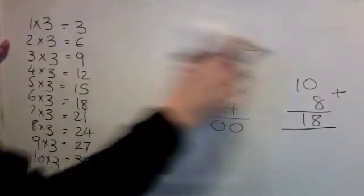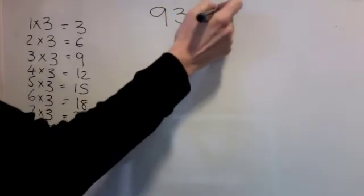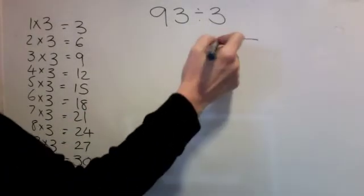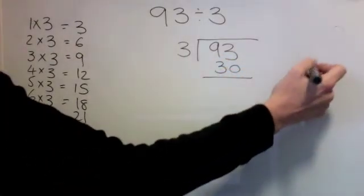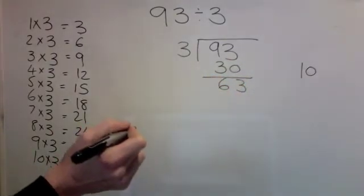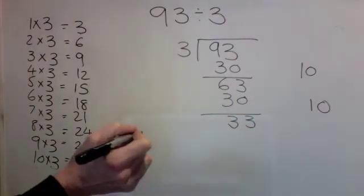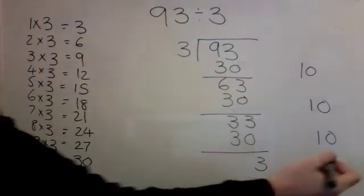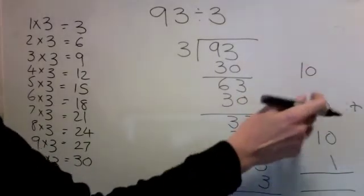Have a go at this one yourself — again using the 3 times table. Pause the video and have a go. Here's the answer. Bus stop — big number inside, little number out. Close to 93: 30. I've used 10 3's to make 30. Take it away. 63 is my new number. I'll use 30 again — 10 3's are 30. Take it away. I'll use 30 again — 10 3's are 30. Take it away. I'm left with 3. 1 three is 3. Take it away. I've finished. Add these up: 10, 20, 30, 31.